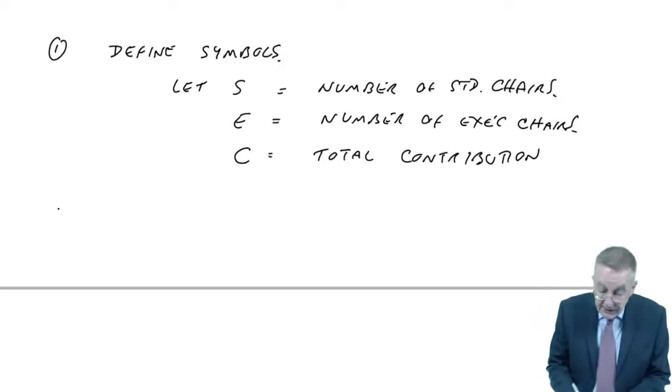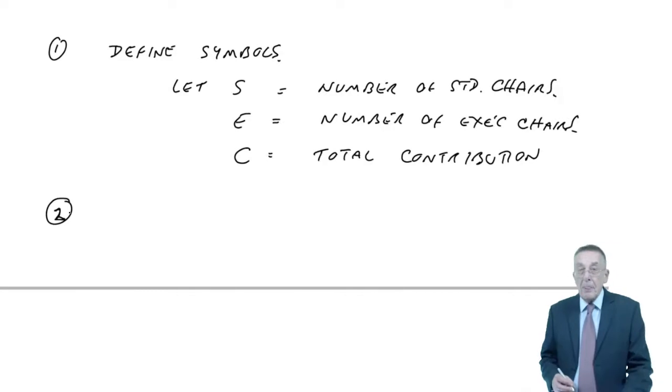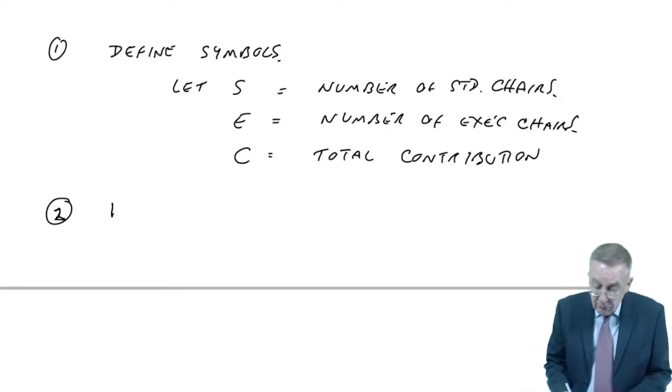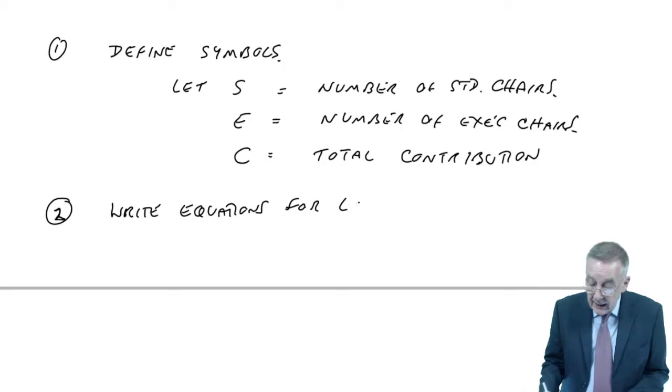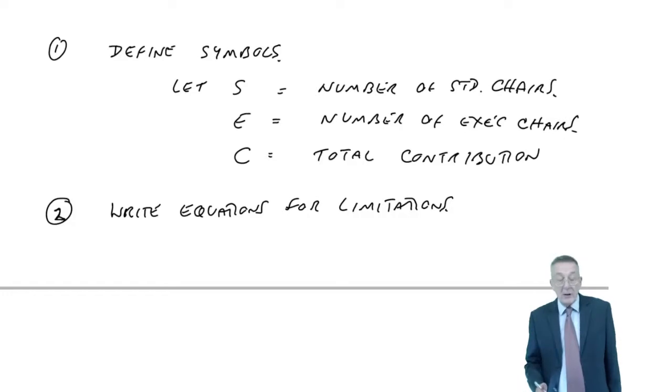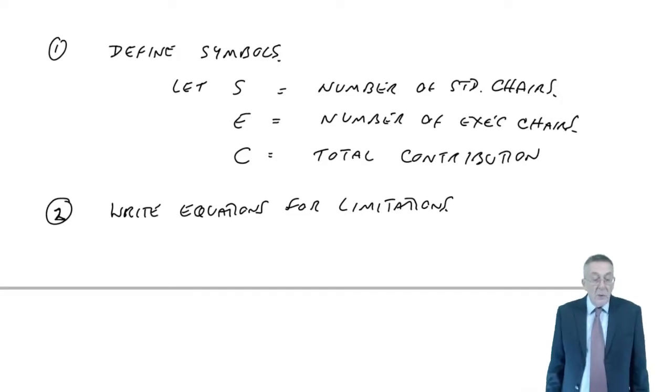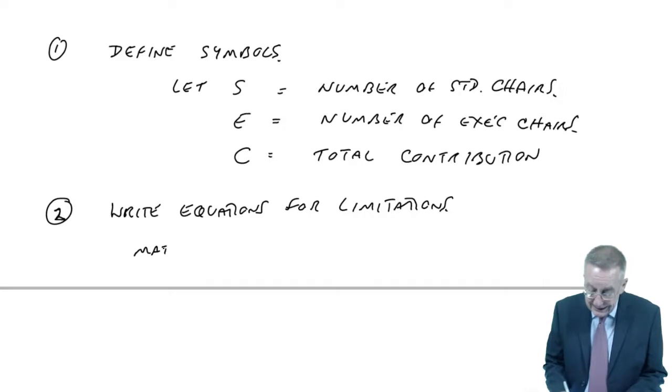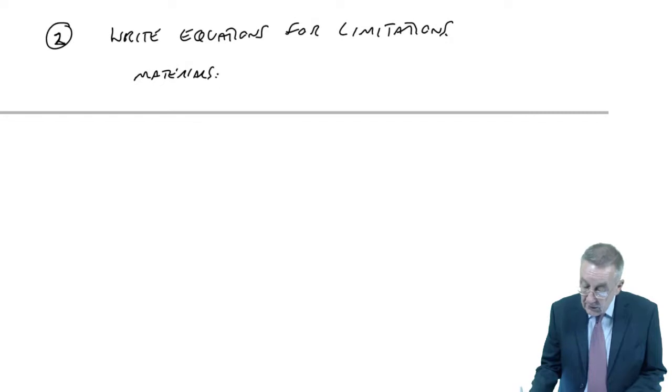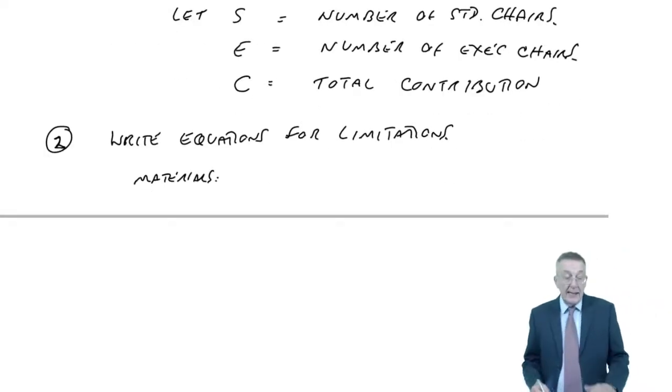Having done that, step two is to write equations for the limitations. Now, again, the words don't matter. It's more importantly clear what I mean by that. Let's look through each in turn. What limits are there on our production? First of all, there's a limit on the materials.